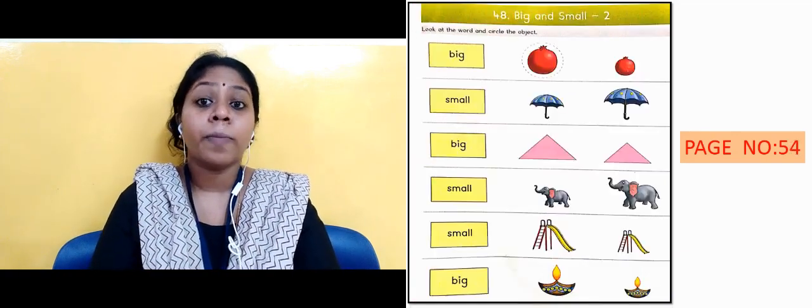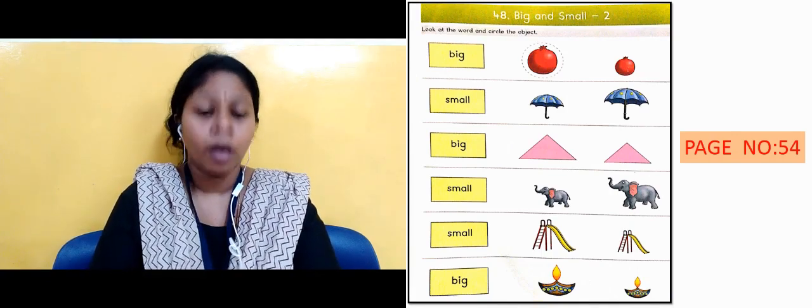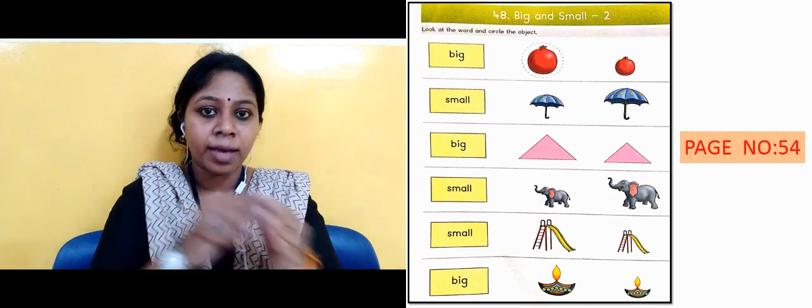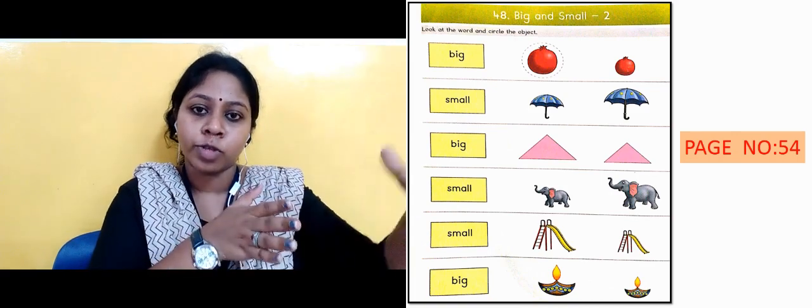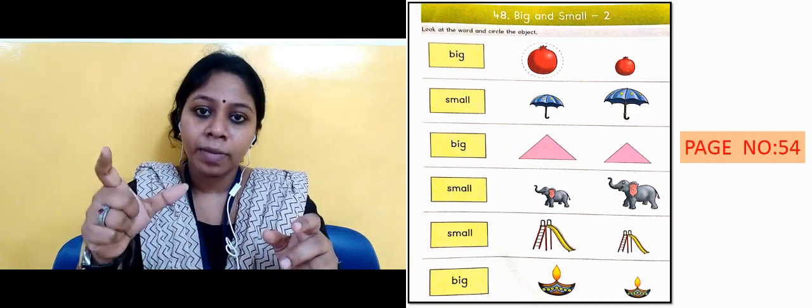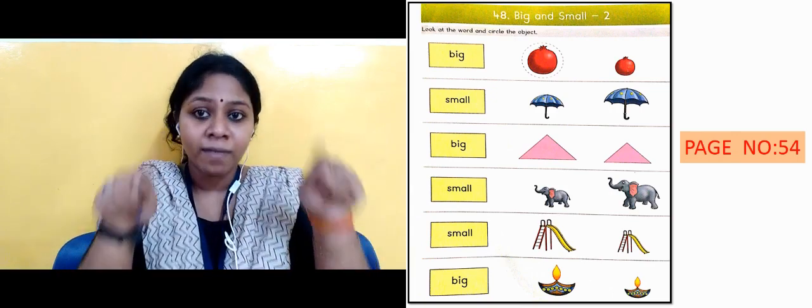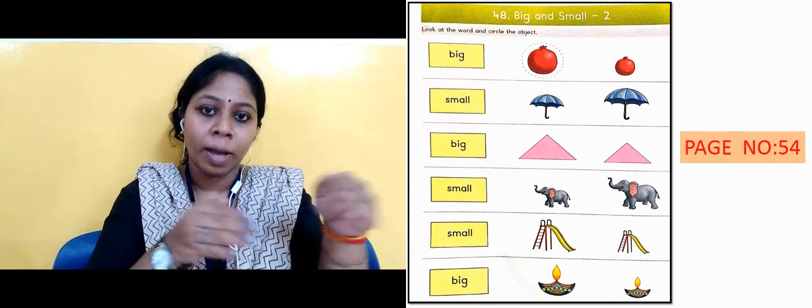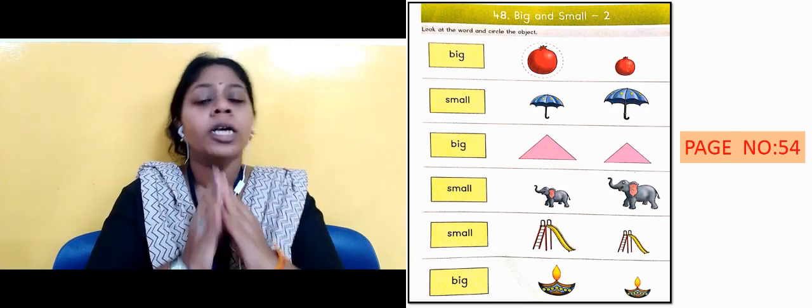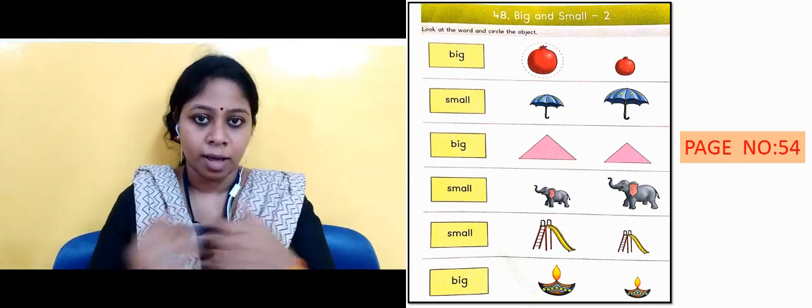Coming to page number 54. What was in this? The second activity of big and small. And what did you write on the side? Big, big, s, m, a, l, l, small. And after that images were given. For example, the first image was pomegranate. Both big and small were given. And what did you do? If it's written big then you circled the big one. If after small two umbrellas were given, what did you do? You circled the small umbrella. So you should practice identifying and doing this activity.